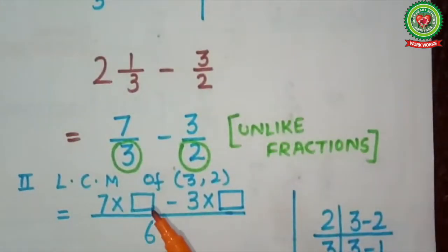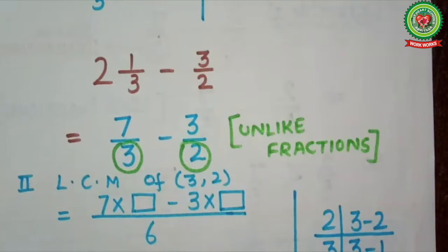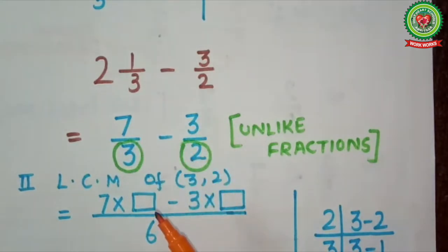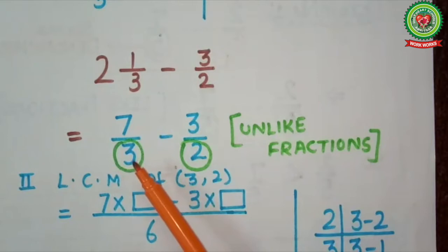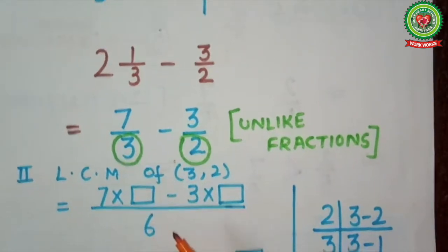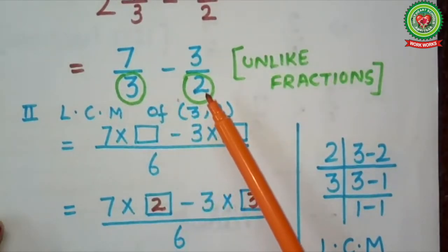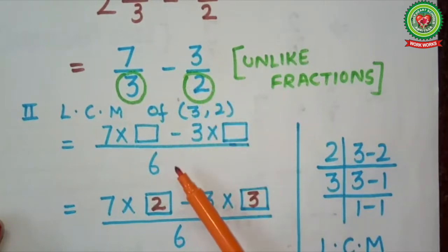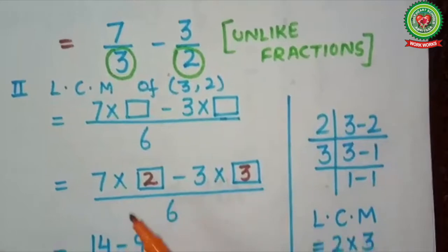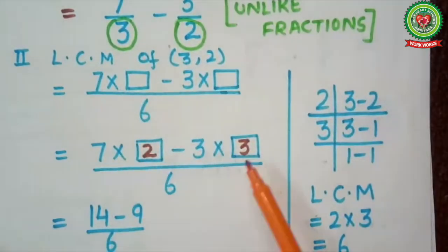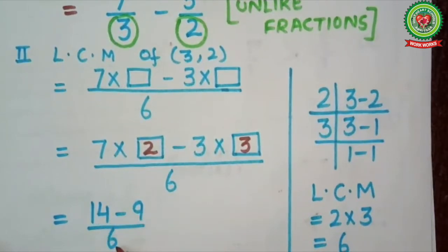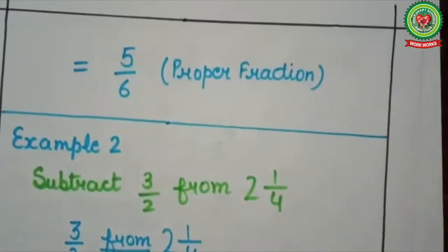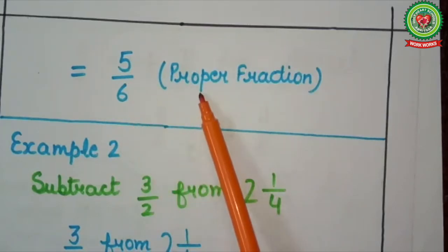Now at the place of 2 whole number 1 upon 3, I will write 7 upon 3. So here it is 7 upon 3 minus 3 upon 2. Denominators 3 and 2 are not the same, therefore these are unlike fractions. Next step: take LCM of denominators 3 and 2. Using the antenna method, LCM is 2 threes are 6. Now change these fractions into like fractions with common denominator 6. In the table of 3, 6 will come at 2, and in the table of 2, 6 will come at 3. So 7 twos are 14 and 3 threes are 9. Here we write 14 minus 9 upon 6. 14 minus 9 equals 5, therefore we write 5 upon 6, which is a proper fraction.